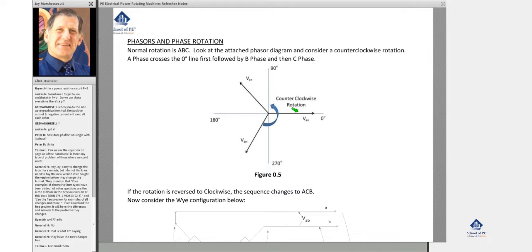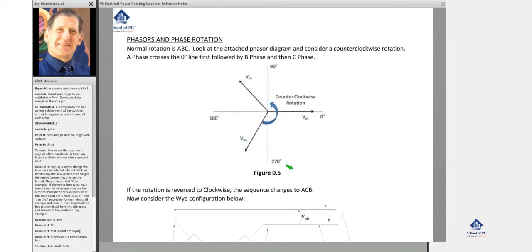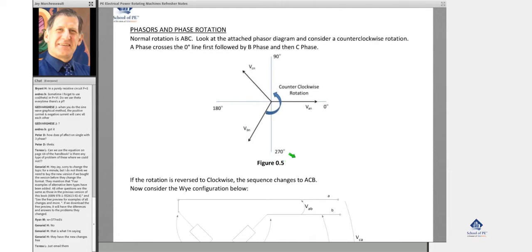A lot of times we'll talk about an ABC rotation, so that means that a phasor, I always think of it, crosses zero, then B crosses zero next, and then C crosses zero after that. So that would be an ABC rotation.